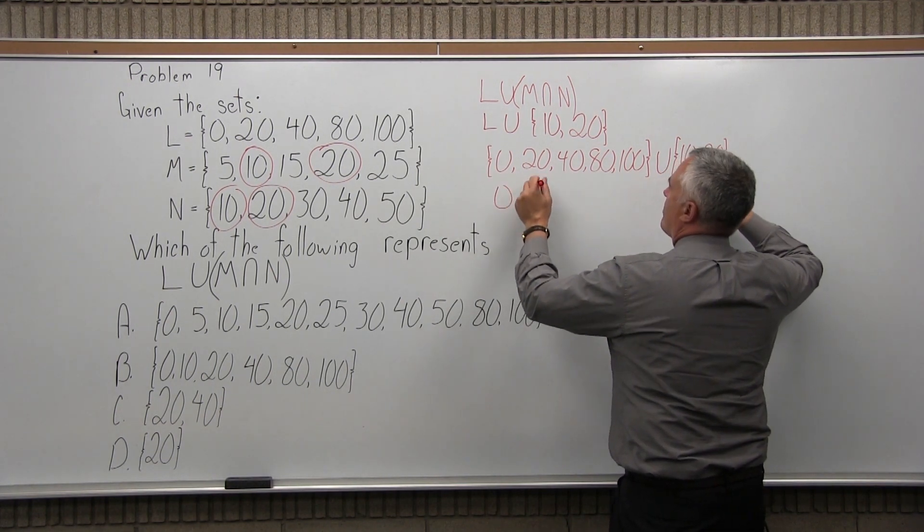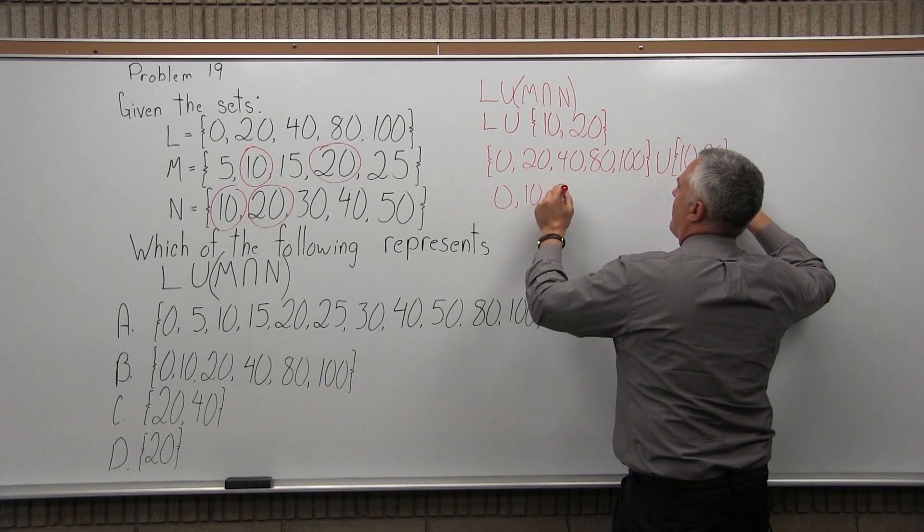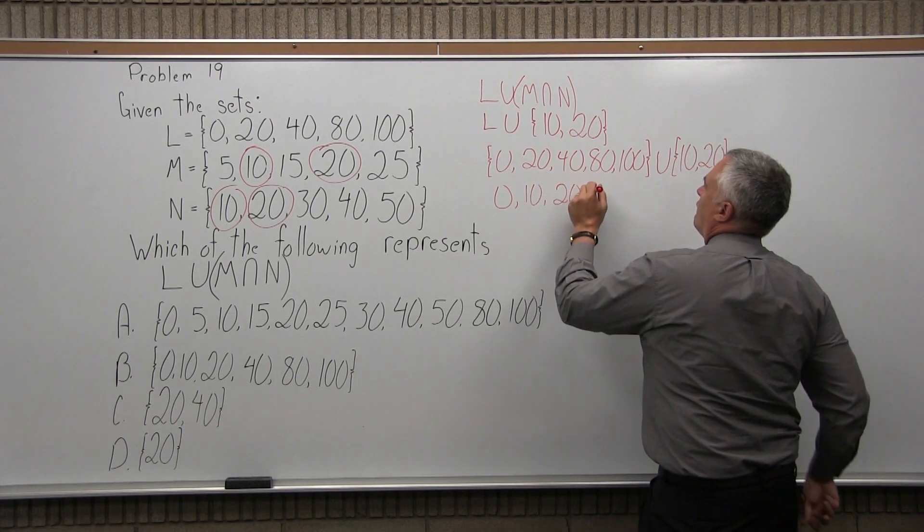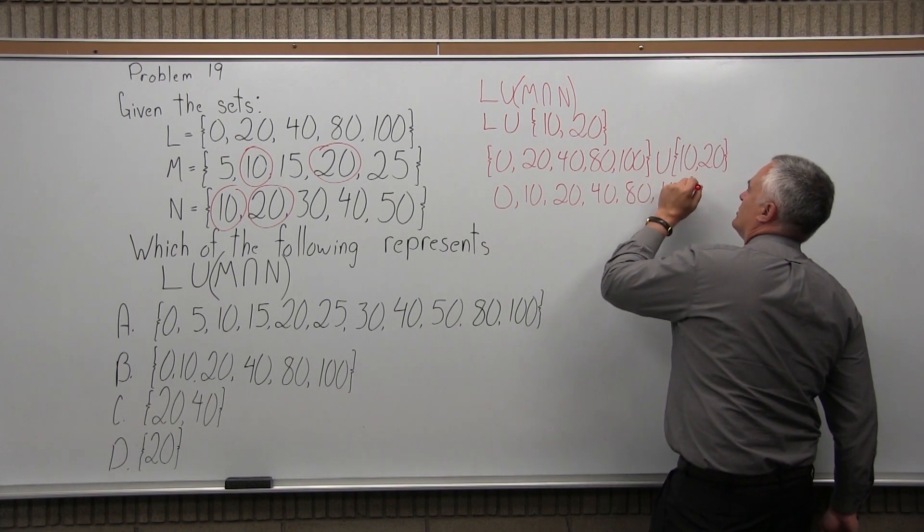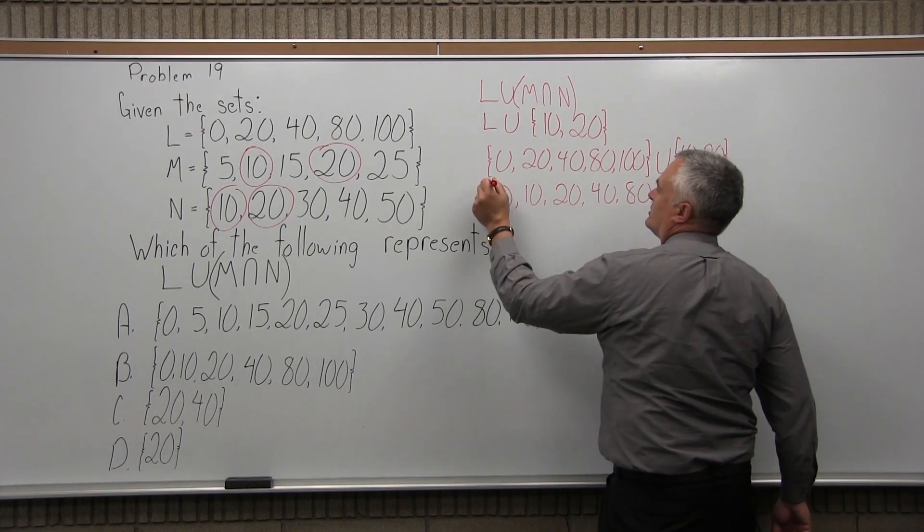So I'm going to have 0, 10, 20, 40, 80, 100. That's what I get when I join those two sets. So I find the union of those two sets.